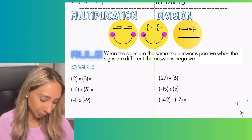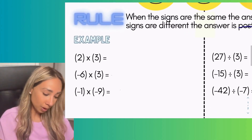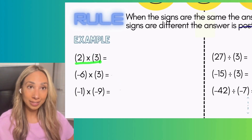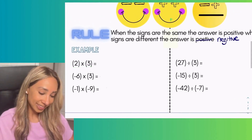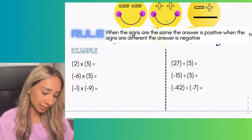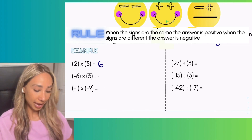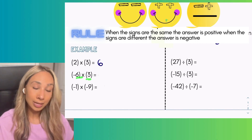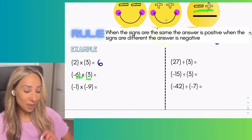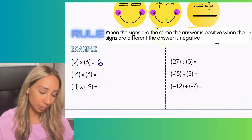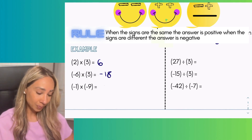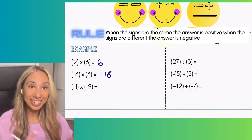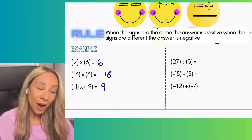Let's look at multiplication examples. First: positive times positive — the eyes are the same, so the answer is positive six. Next: negative six multiplied by positive three — the signs are different, so the answer is negative eighteen. In the last example: negative one times negative nine — the signs are the same, so the answer is positive nine.